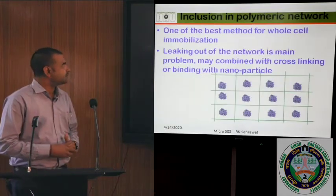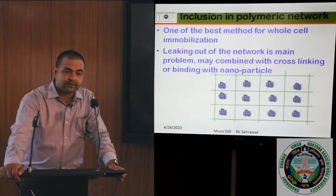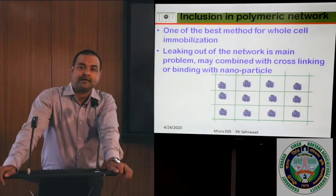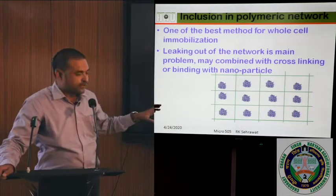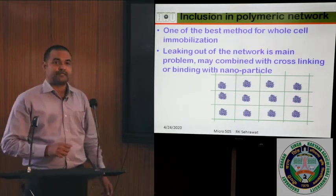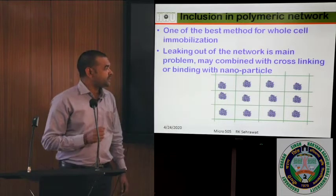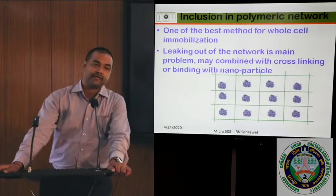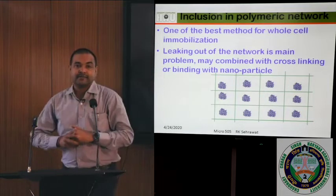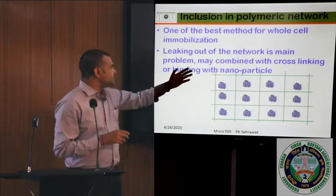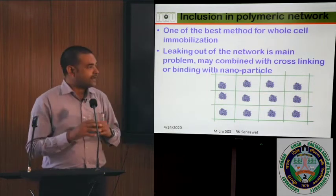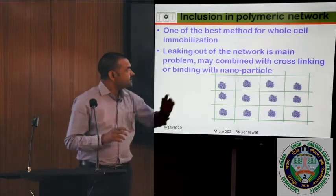Inclusion in the polymeric network is also one of the best methods for whole cell immobilization. The major constraint when using the polymeric network is the diameter of the enzyme — it is very small and the enzyme may leak from the network. To avoid that, we can first go with cross-linking or binding with a nanoparticle; the enzyme is first cross-linked or bound with the nanoparticle and after that it is used in the polymeric network.